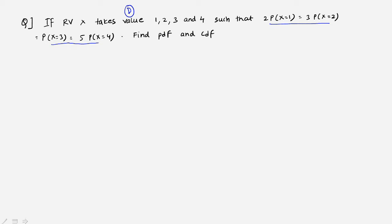The equation states: 2·P(X=1) = 3·P(X=2) = P(X=3) = 5·P(X=4). We have to find the PDF — the probability density function, also called the probability mass function — and the CDF, which is the cumulative distribution function. So basically we have to find two things.